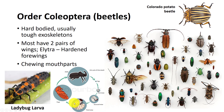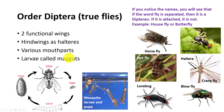Beetles have chewing mouthparts, and some are predators like ladybug adults and larvae, while others feed on plants and can be major plant pests, like the Colorado potato beetle. Flies are insects with a pair of functional wings for flight and vestigial hindwings called halteres for balance. They are classified into the order Diptera, derived from the Greek meaning two wings.